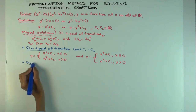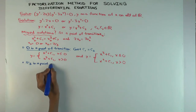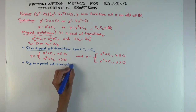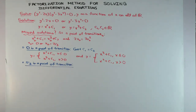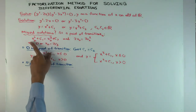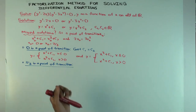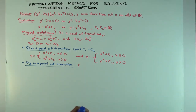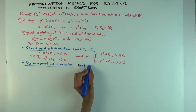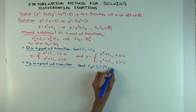Now let's consider the case where x₀ = 2/3 is the point of transition. The relation between c₁ and c₂: plugging in x = 2/3, we get (2/3)² + c₁ = (2/3)³ + c₂, so c₂ = c₁ + (2/3)² − (2/3)³ = c₁ + 4/27.